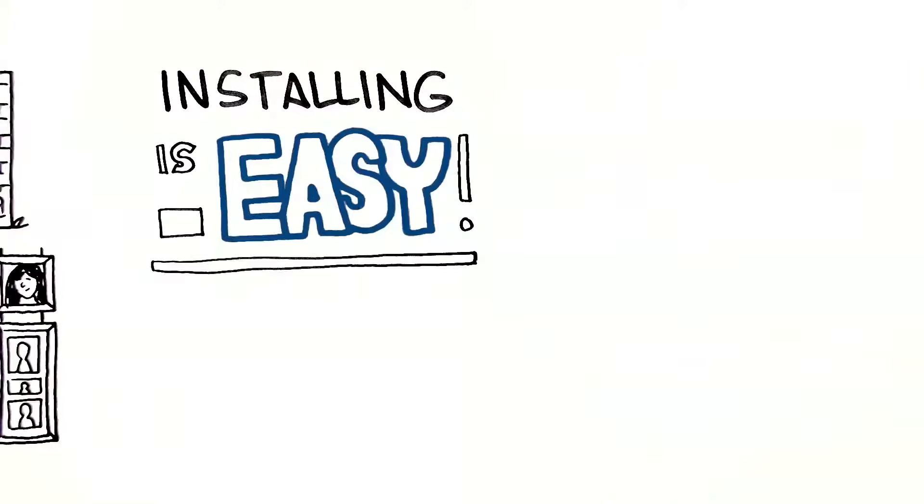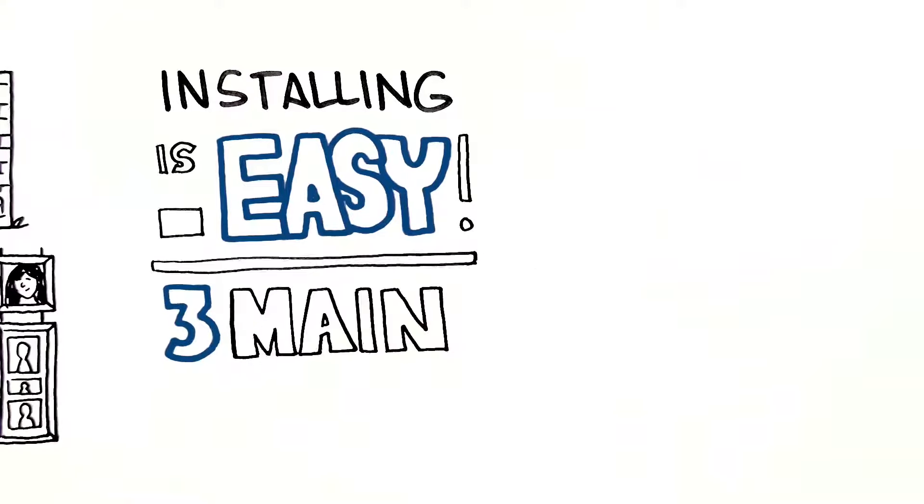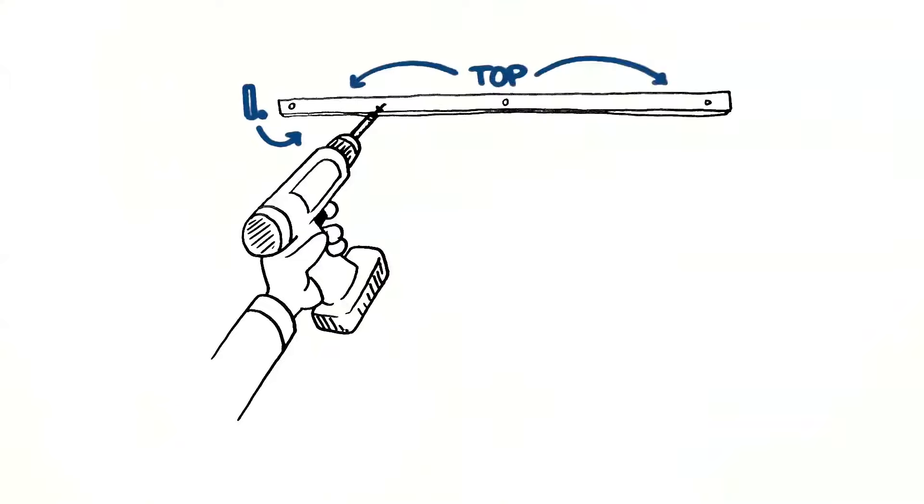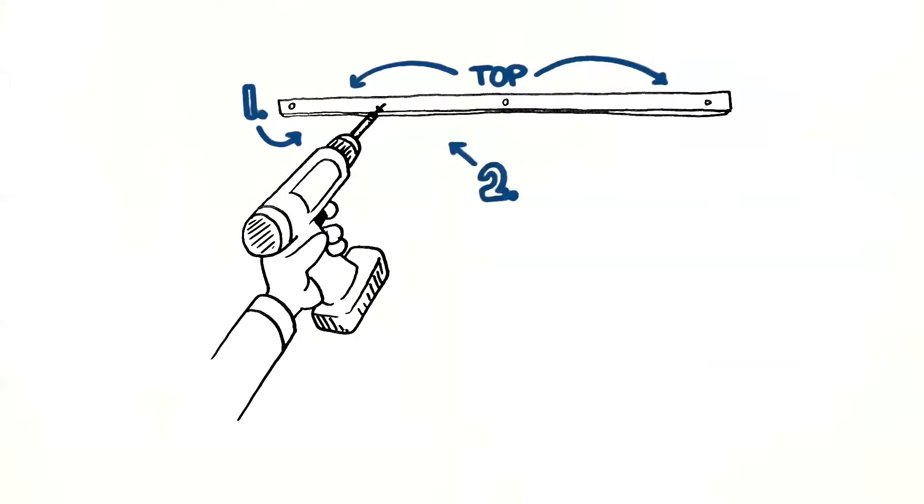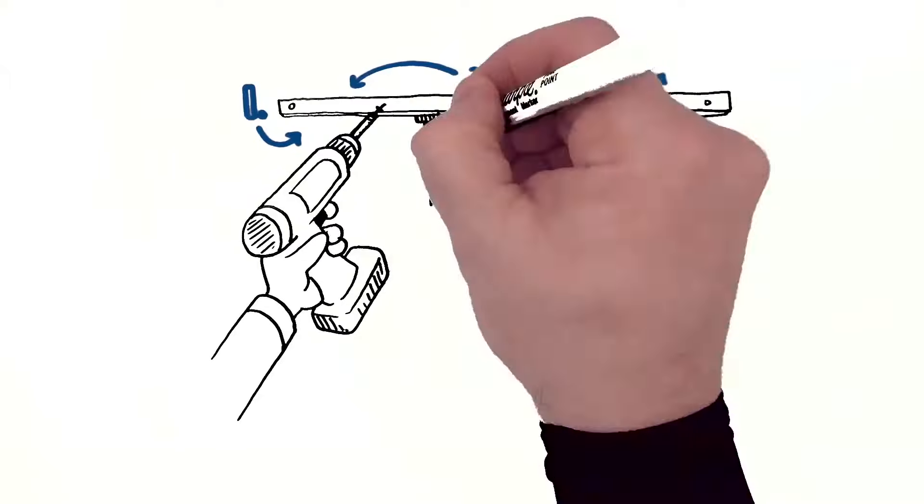Installing the system is easy to do and has only three main components. One, the picture rail, which is usually installed at the top of the wall. Two, hangers, which insert into the picture rail and adjust left to right.